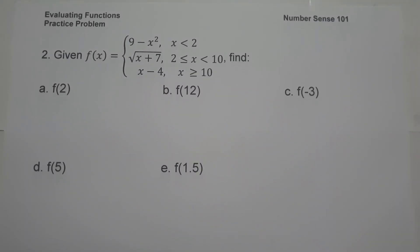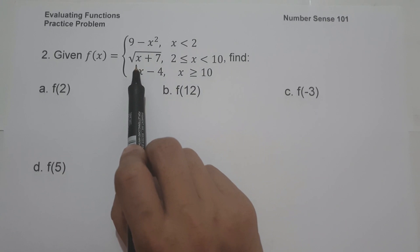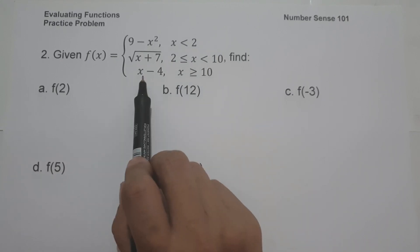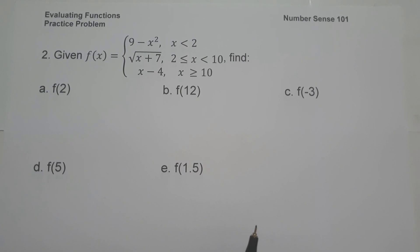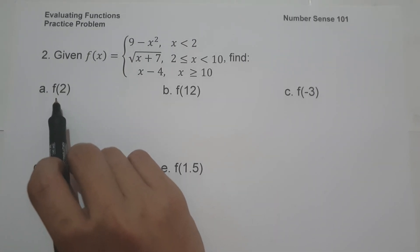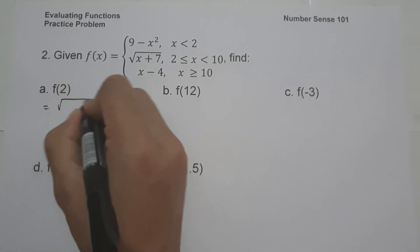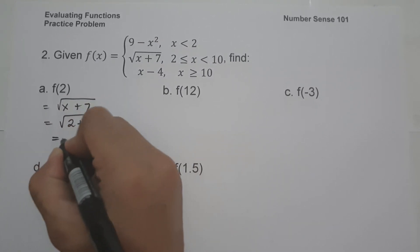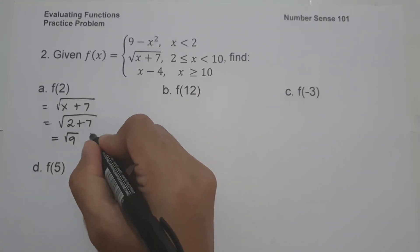On number 2, we have a piecewise function. Given that f of x equals 9 minus x squared if x is less than 2; equals the square root of x plus 7 if x is greater than or equal to 2 but less than 10; and equals x minus 4 if x is greater than or equal to 10. On letter a, we find f of 2. Since x equals 2, we use the square root of x plus 7. This gives the square root of 2 plus 7, which is the square root of 9, and that is 3. This will be our answer.